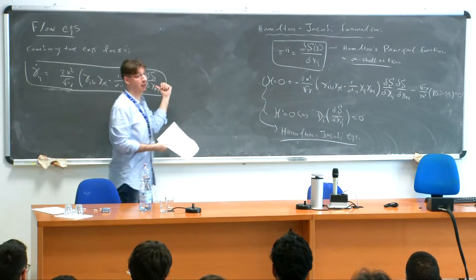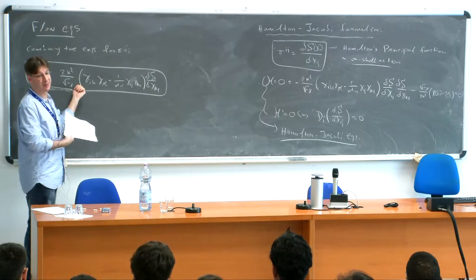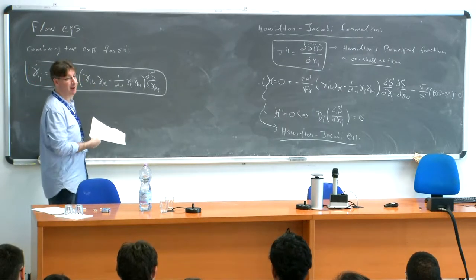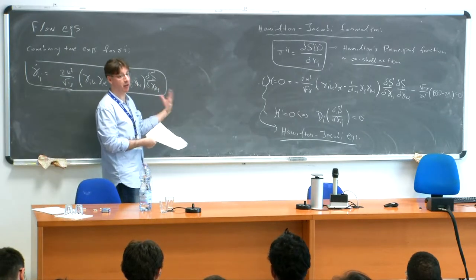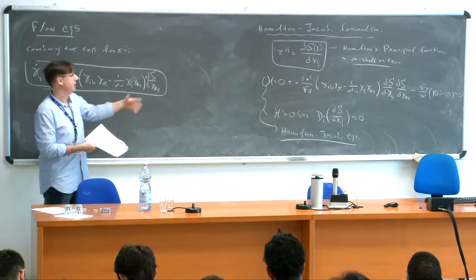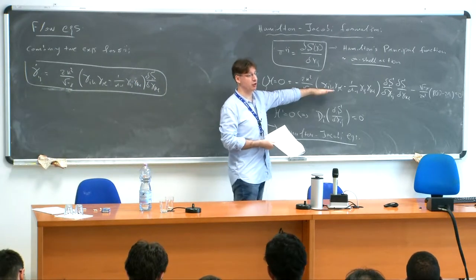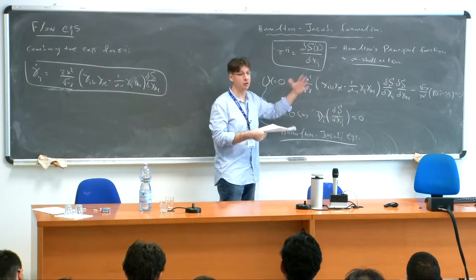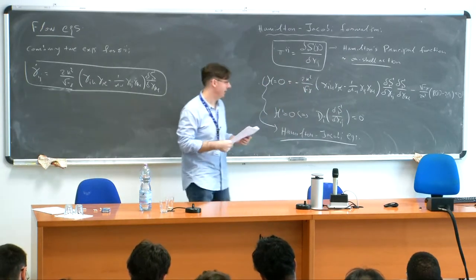A very special solution of the Hamilton-Jacobi equation in supersymmetric theories is the supersymmetric superpotential. If you plug this particular solution back into this flow equation, you will get the BPS equations of the theory. Of course, this applies more generally — to all solutions of the theory, not only the supersymmetric ones. For non-supersymmetric solutions, solving this Hamilton-Jacobi equation is much harder, and usually the solution does not exist globally — it exists only locally.